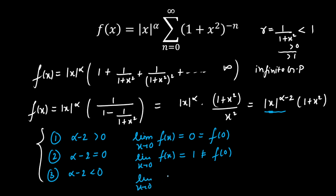For Case 3, when alpha is less than 2 so that α−2 is less than 0, the limit as x tends to 0 of f(x) does not exist. This is because the expression becomes (1 + x²) divided by |x|^(2−α), and the degree of the denominator is greater than the numerator, making the limit go to infinity — not a finite value. So the limit does not exist and the function is not continuous in this case either.